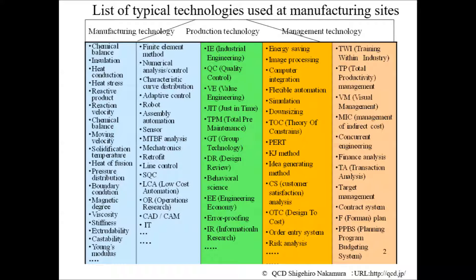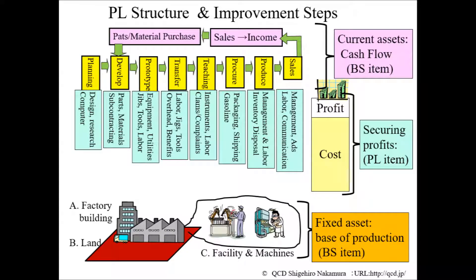After completing this type of countermeasures, the company will create a structure that can secure corporate earnings by adding production technology and management technology to keep efficient product manufacturing. Regardless of industry type, we will evaluate the quality of the result of a company's activities.